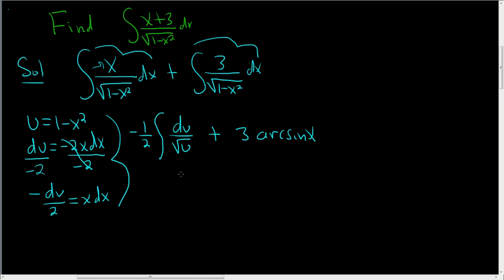We'll add the constant at the end. How did I get arcsin? The formula for this integral is the square root of (a²-x²), which gives arcsin(x/a). In this case, it's the simplest case: a is 1, so you just get arcsin x.